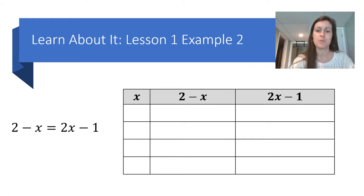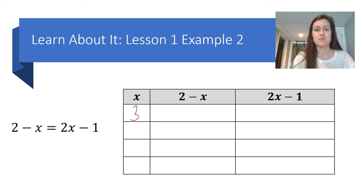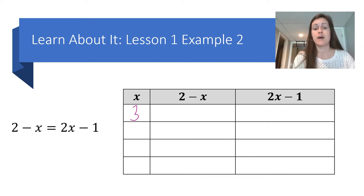So let's learn about it. This is our first example where we're going to solve an equation by using a guess-and-check method and organizing that information into a table. The equation that I'm going to solve is 2 minus x equals 2x minus 1. When I'm guessing and checking, I like to pick friendly numbers. I'm going to start with 3, substitute it into each side of the equation — so each expression: 2 minus x and 2x minus 1 — and evaluate to see if I get the same result.